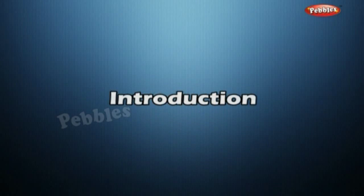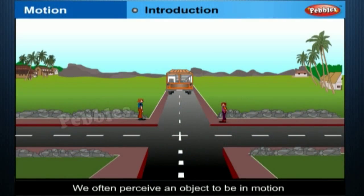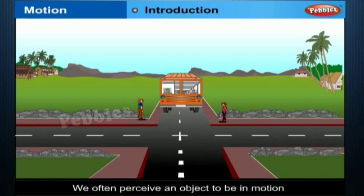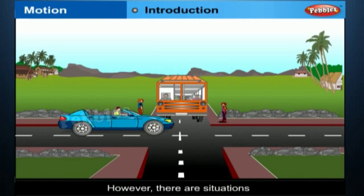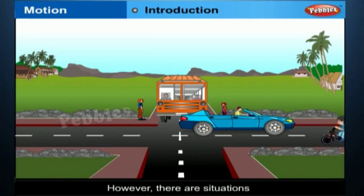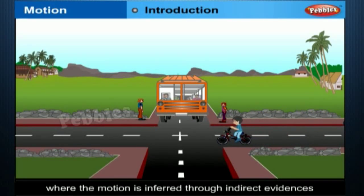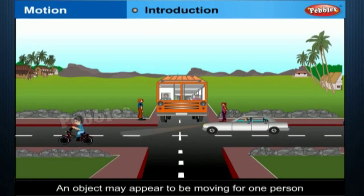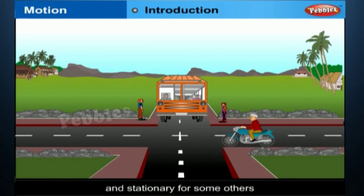Motion. Introduction. We often perceive an object to be in motion when its position changes with time. However, there are situations where the motion is inferred through indirect evidences. An object may appear to be moving for one person and stationary for some others.